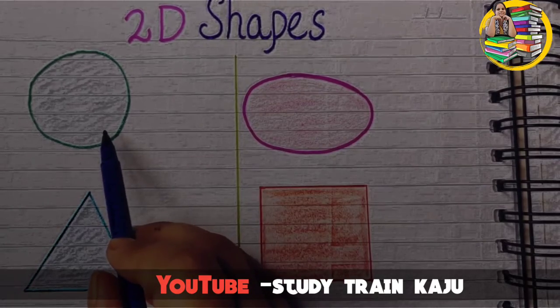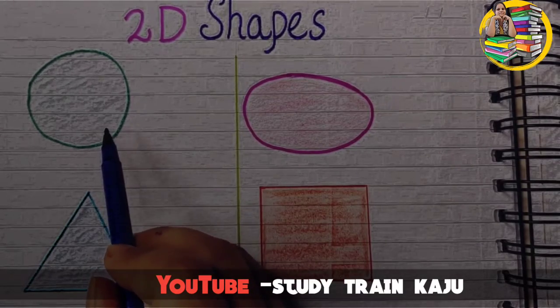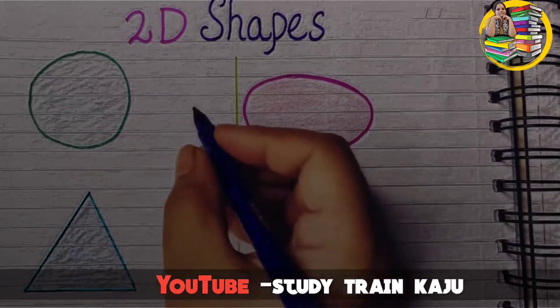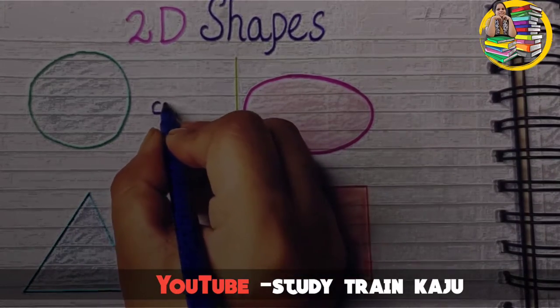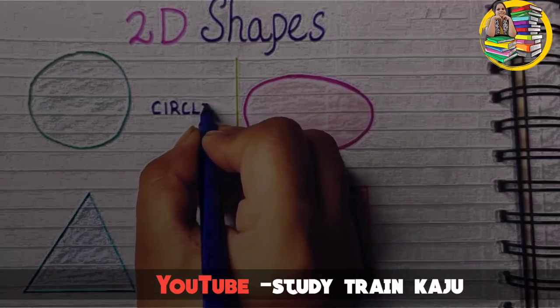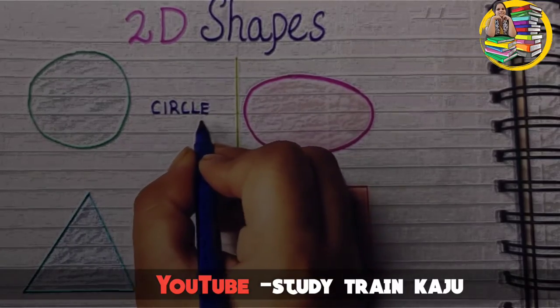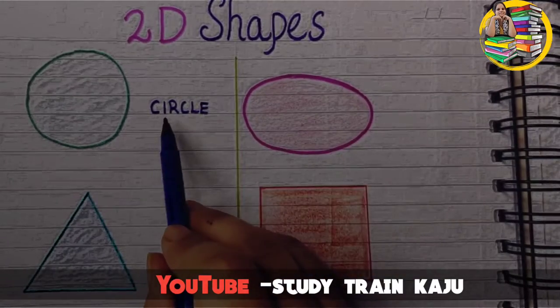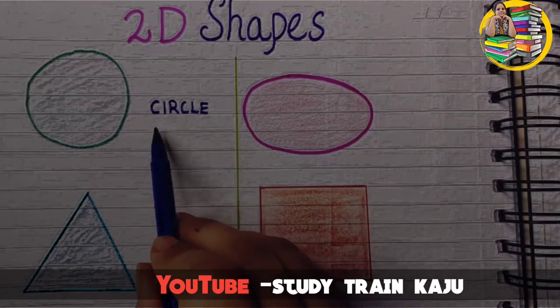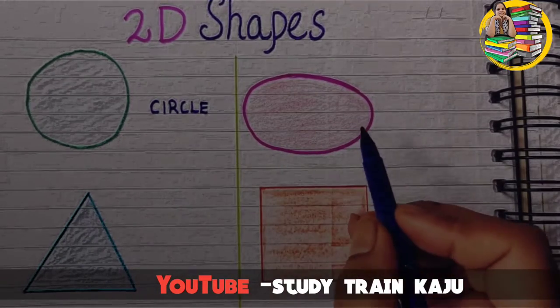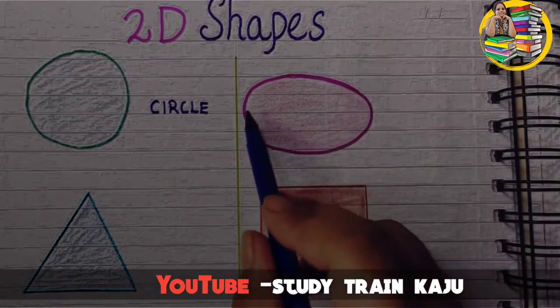The first shape is round and it is known as circle. C-I-R-C-L-E. Circle.